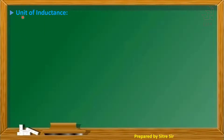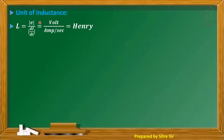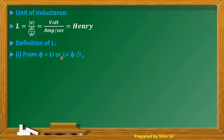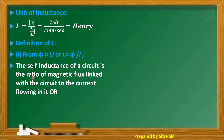Next, the unit of inductance L: the inductance unit is equal to E upon dI/dt. The current unit is ampere and time is second, so the unit is volt-second per ampere. The self-inductance of a circuit is the ratio of magnetic flux linked with the circuit to the current flowing in it, that is L equals phi by I.